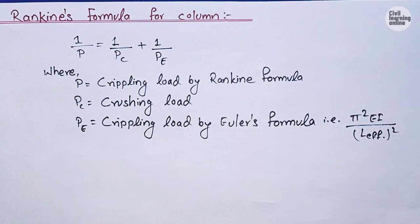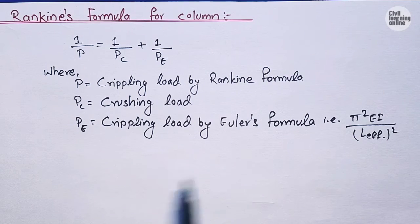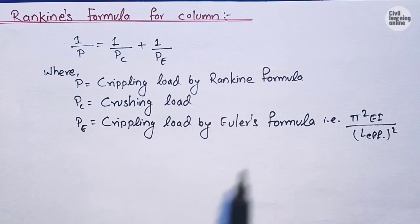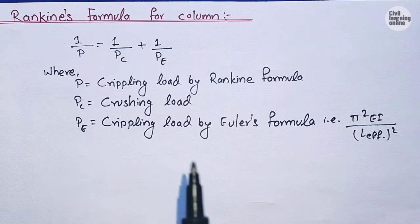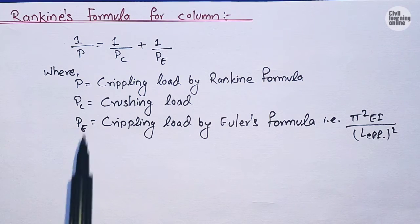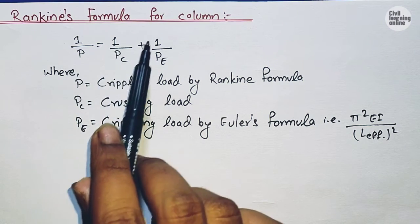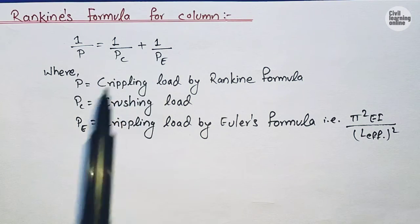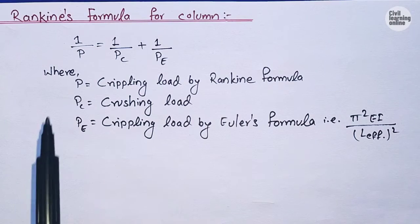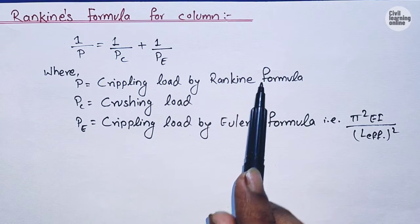Euler's formula is valid only for long columns, whereas Rankine's formula is valid for both long columns and short columns. The general form of Rankine's formula is: 1/P = 1/PC + 1/PE, where PE is the crippling load by Euler's formula.